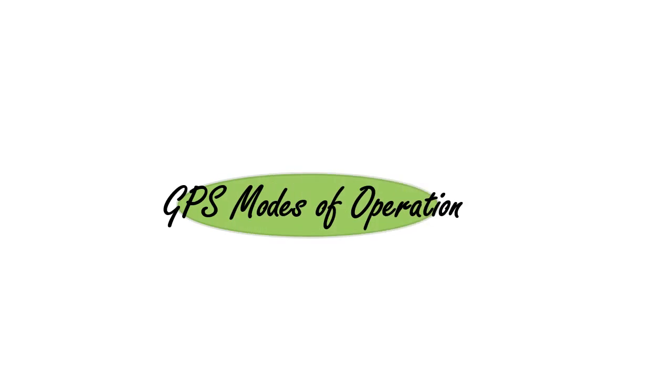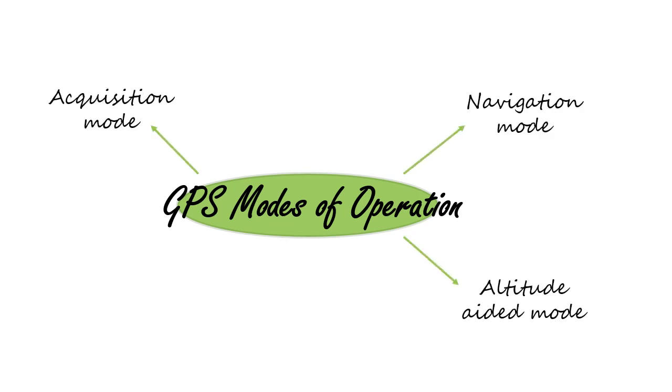The Boeing 777 multi-mode receiver can operate in 4 modes. These are acquisition mode, navigation mode, altitude-aided mode, and aided mode.